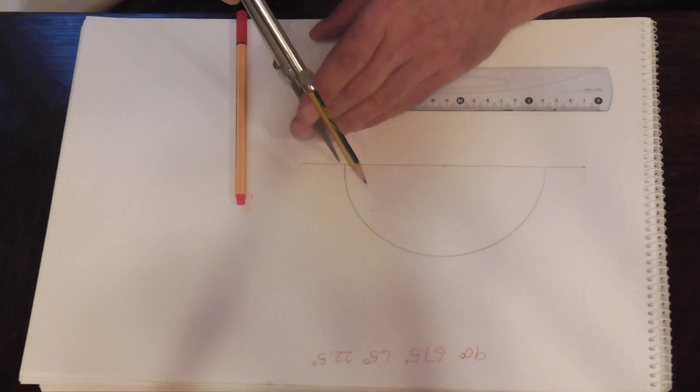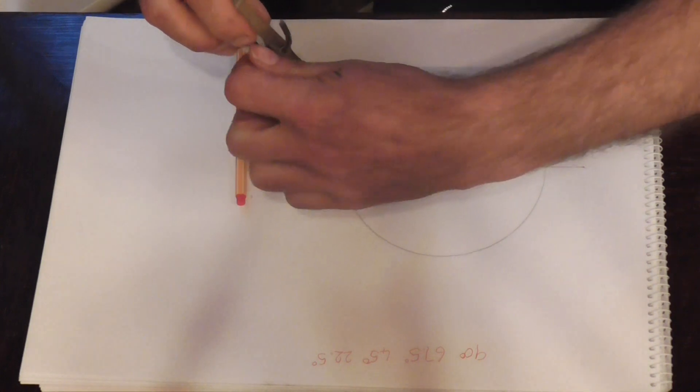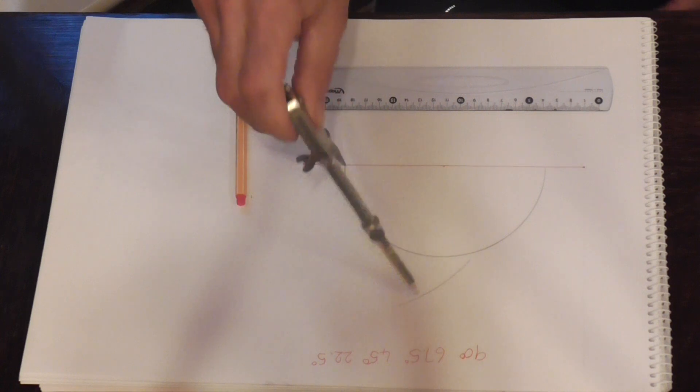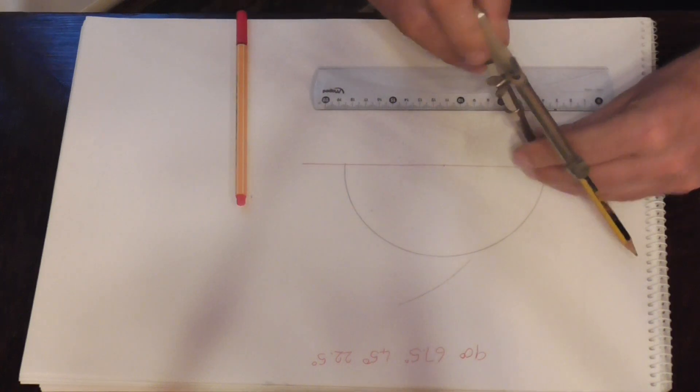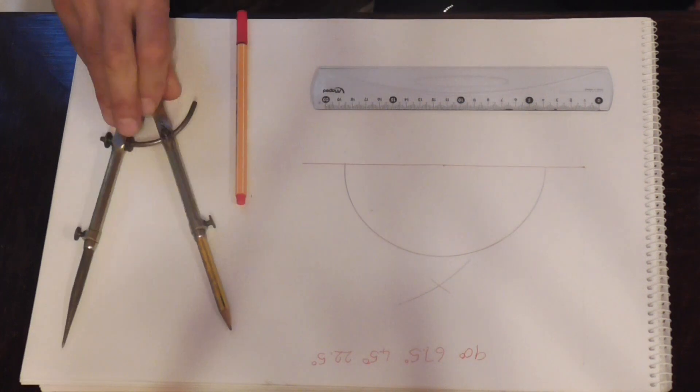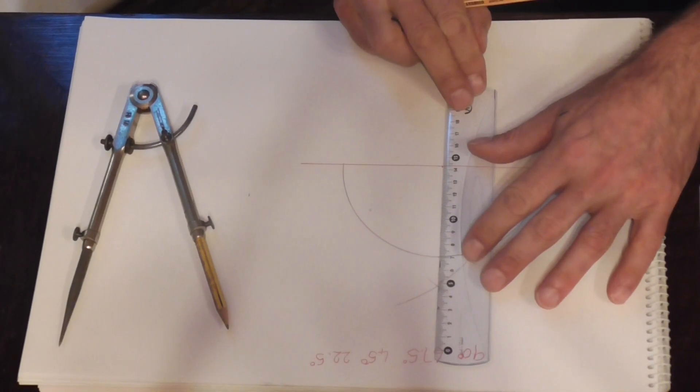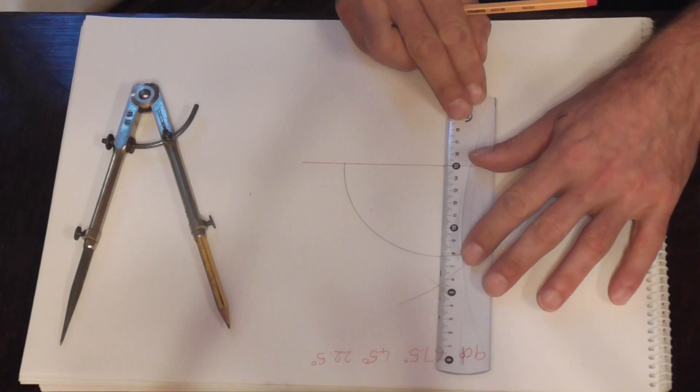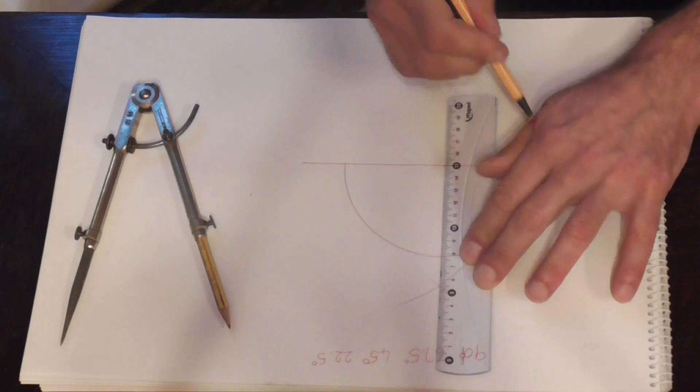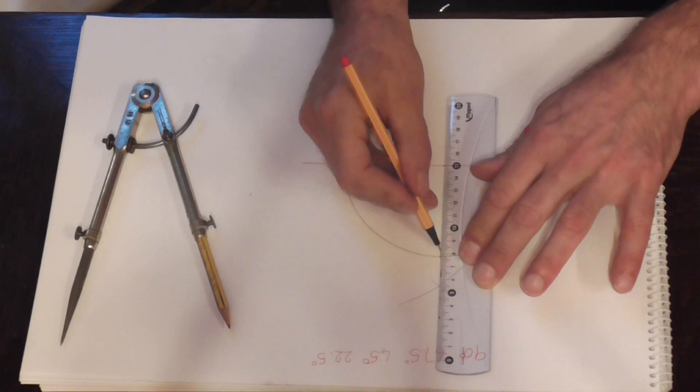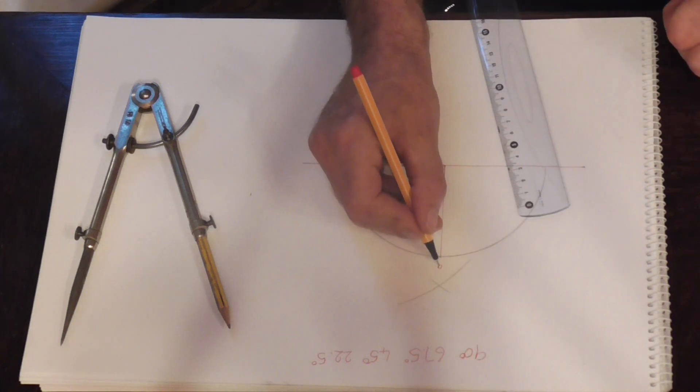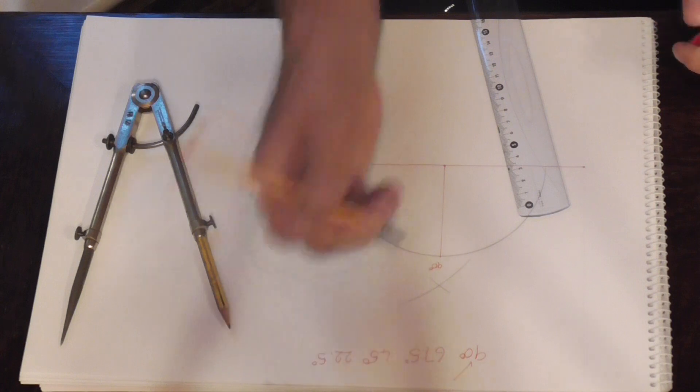The first angle we are going to do will be 90. We will do that like this. Straight through the middle. So through the middle of here and through the middle of there will give us 90 degrees. So there is 90. That is that one done.